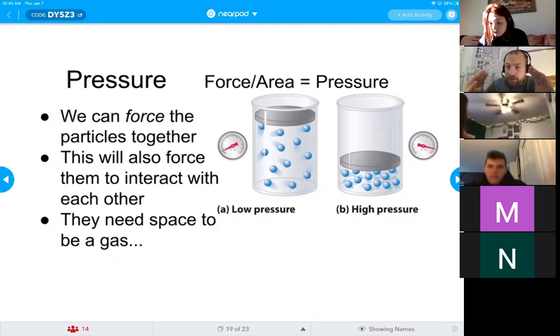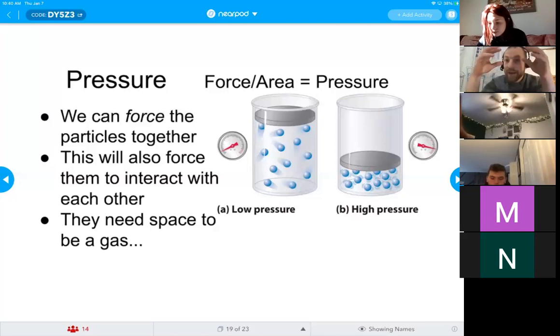As they get closer and closer and closer, they get more and more attracted. And as they get more and more attracted, they're more and more likely to glom onto each other. So I can force something to stay a liquid beyond its boiling point if I can pressure them into it.